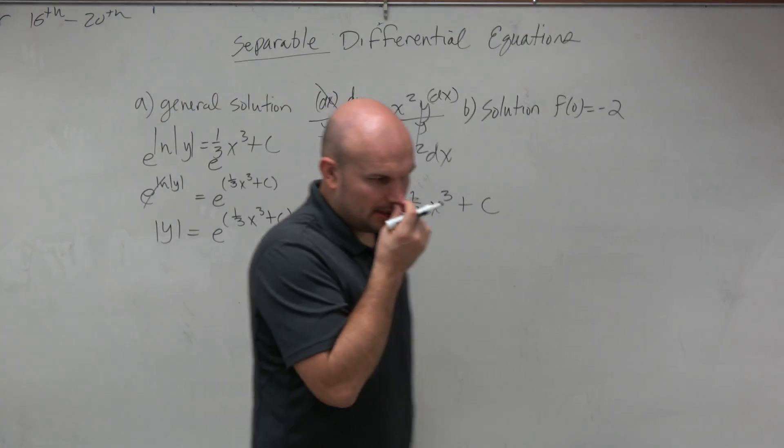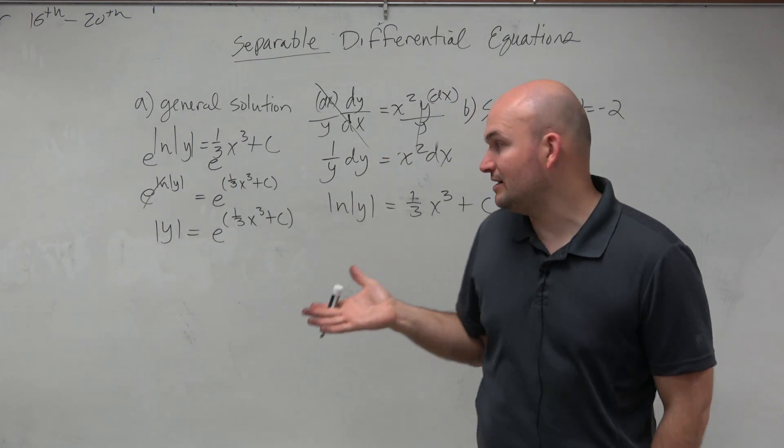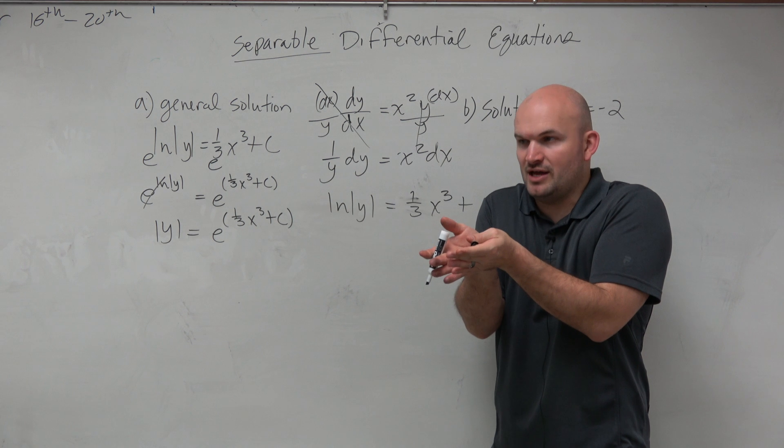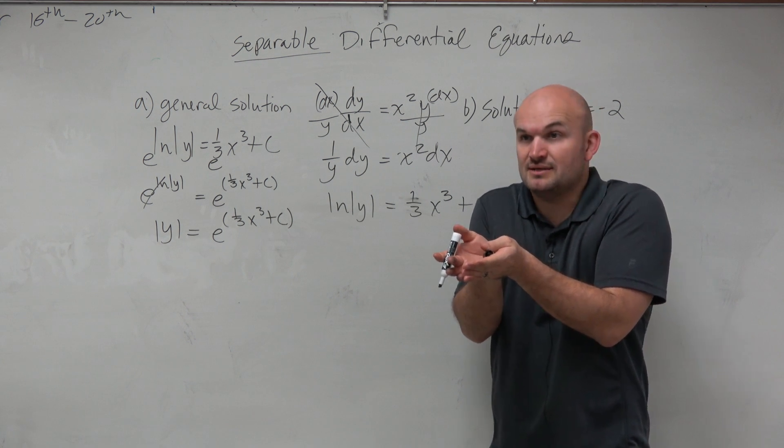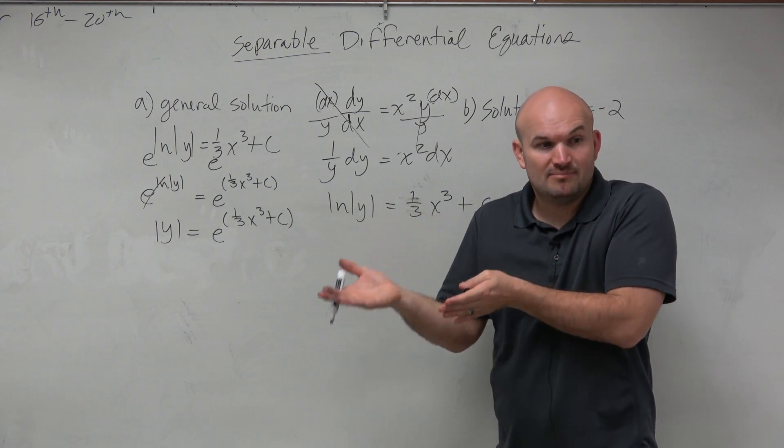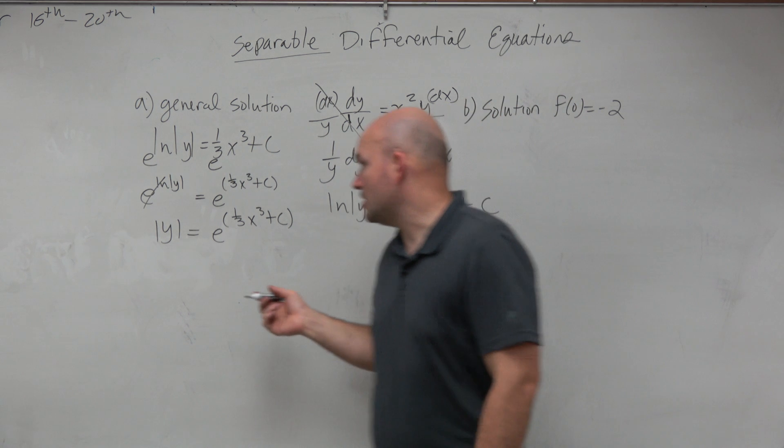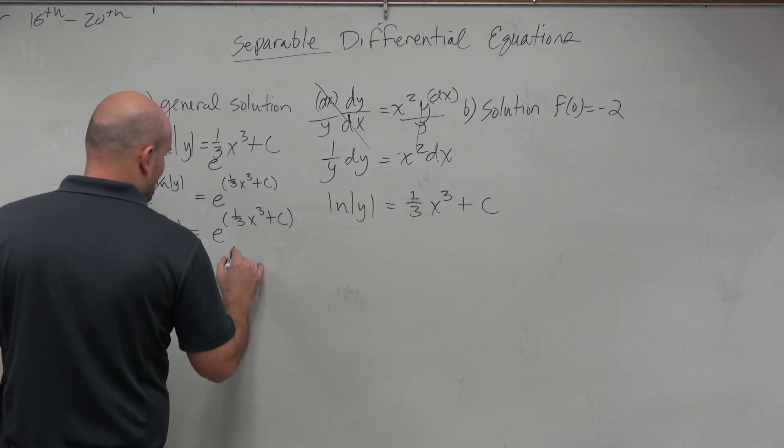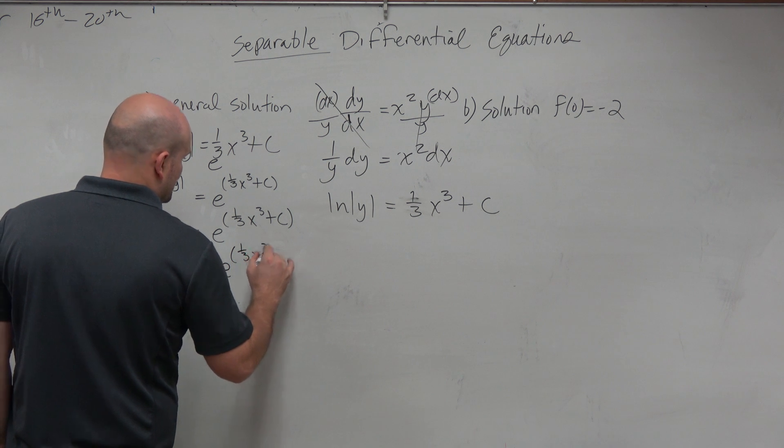Because if we want to get rid of the absolute value, that's actually really not that bad. Because if you guys think about the absolute value, all we need to do is consider two cases when the value is positive or negative, right? So to really get rid of this, we have y equals plus or minus e to the 1/3 x cubed plus c.